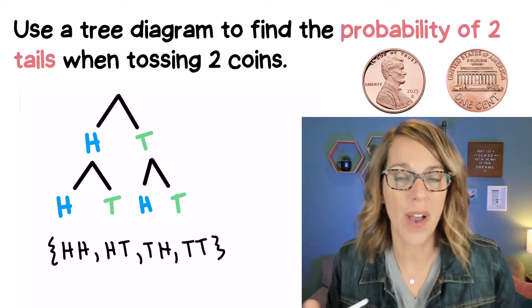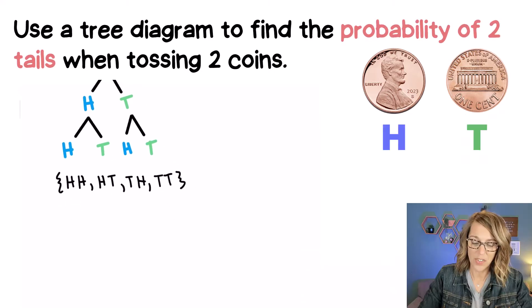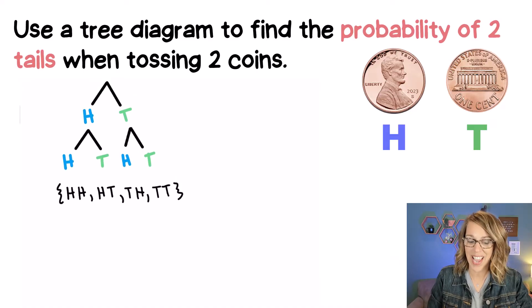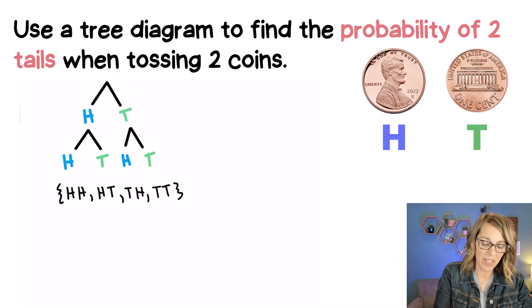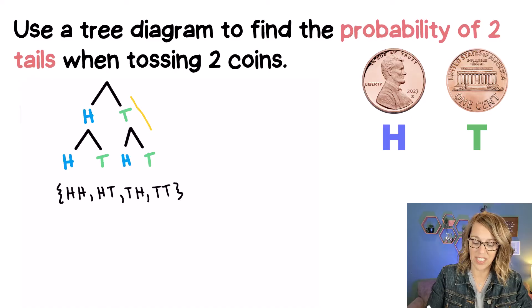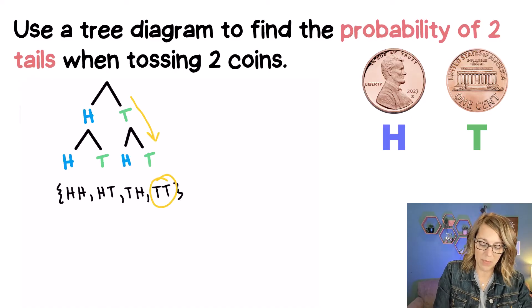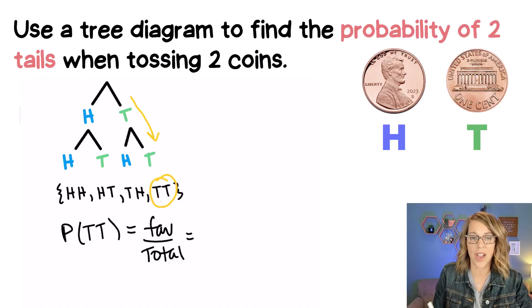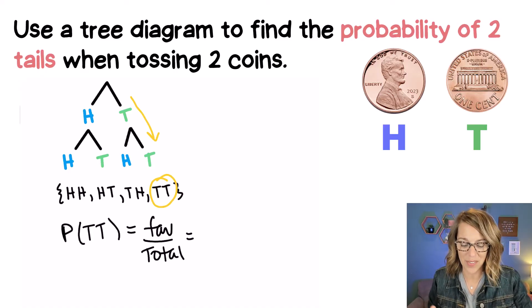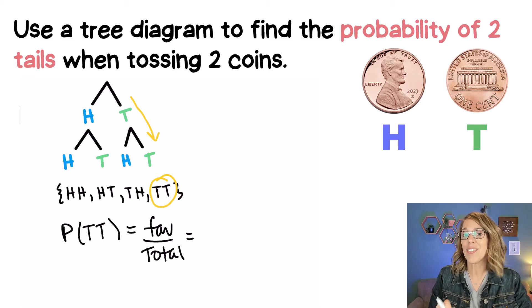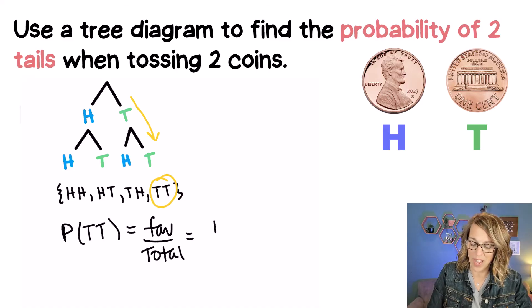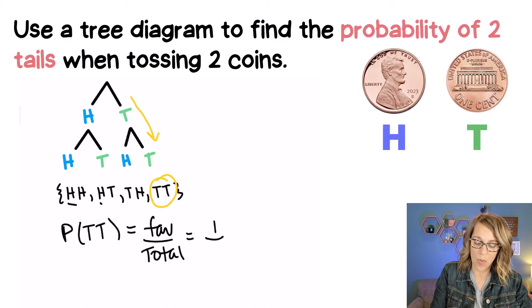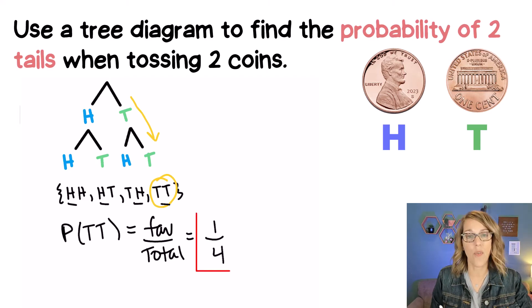From here, I have a couple of options for computing that probability. If I do my probability just by counting, I know that the probability of getting both tails lives right here. That probability is equal to the number of favorable outcomes out of the total number of outcomes. I've circled that single favorable outcome, so I've got one, and my total outcomes — one, two, three, four — are four.